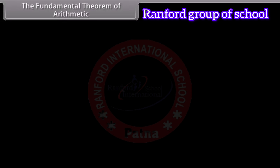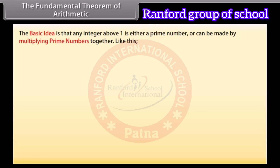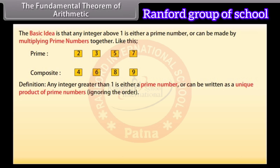The fundamental theorem of arithmetic: The basic idea is that any integer above 1 is either a prime number or can be made by multiplying prime numbers together. Any integer greater than 1 is either a prime number or can be written as a unique product of prime numbers, ignoring the order.